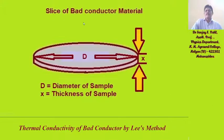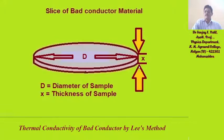The slice of bad conductor has diameter D and thickness X. The diameter is to be measured with the help of a Vernier caliper, and the thickness is to be measured with the help of a screw gauge micrometer.